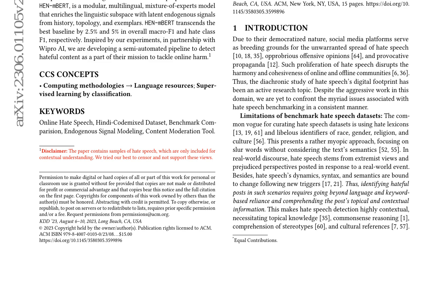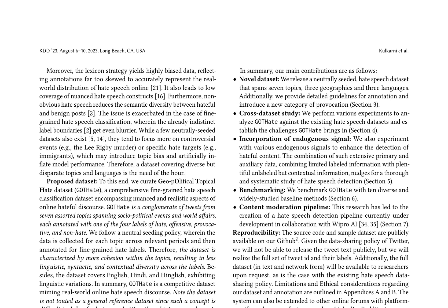The authors benchmark GOT Hate against 10 baseline models and propose a novel model, Hennembert, which augments multilingual BERT with endogenous signals. Hennembert incorporates users' historical data, exemplary tweets, and social connections via the Ego network to enhance hate speech detection. The authors also explore the importance of incorporating endogenous signals such as user-posting history and social connections to improve hate speech detection.